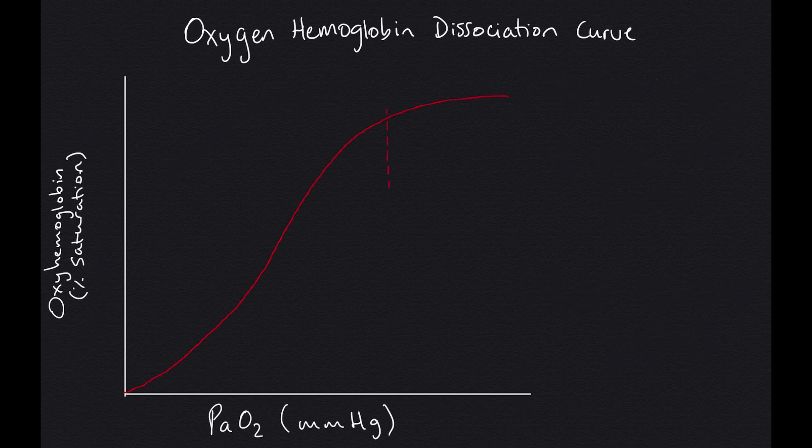We see that once we hit about 60 millimeters of mercury in our partial pressure, the curve plateaus and we don't get as much of an increase in oxyhemoglobin saturation percentage with an increase in our partial pressure.